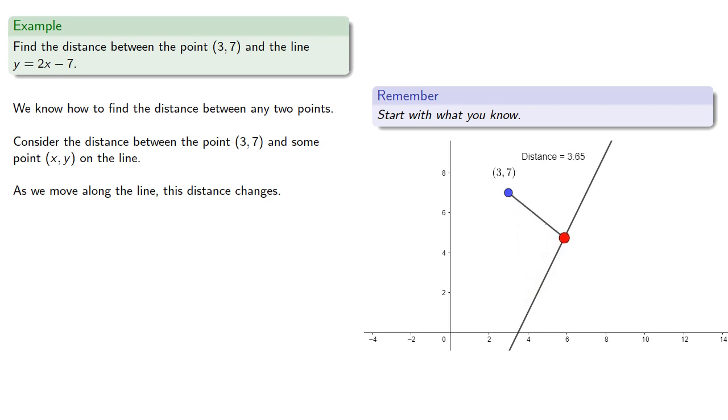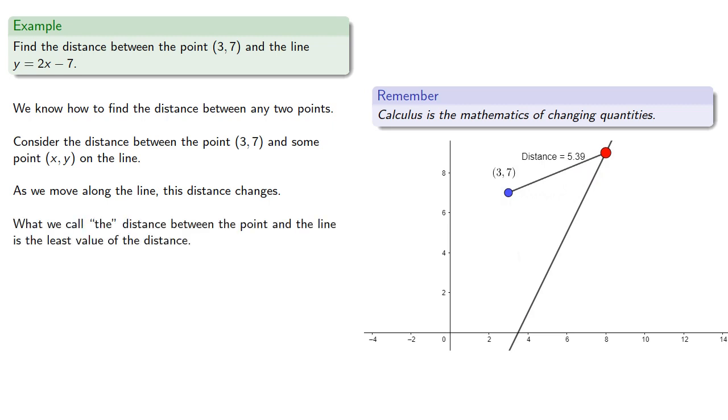And remember, calculus is the mathematics of changing quantities. Now, what we call the distance between the point and the line is going to be the least value of these distances. So this is an optimization problem.